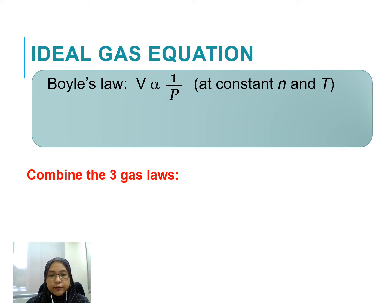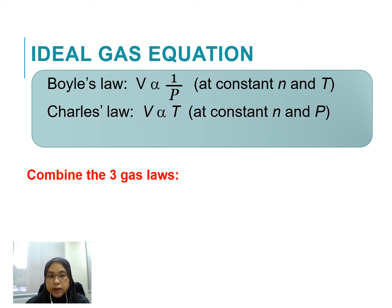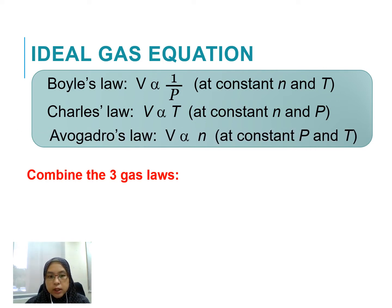Boyle's law is V inversely proportional with P at constant number of mol and temperature. Charles' law is V directly proportional with T at constant number of mol and pressure. Avogadro's law is V directly proportional with number of mol at constant pressure and temperature. We combine these three gas laws and it gives us V directly proportional with nT over P.